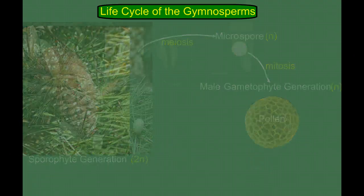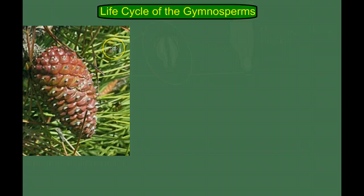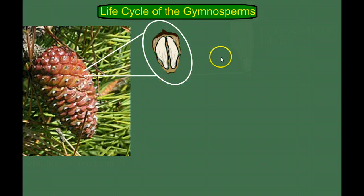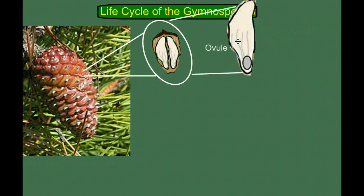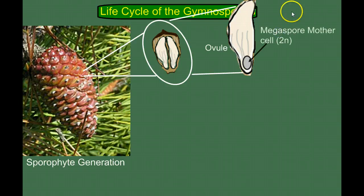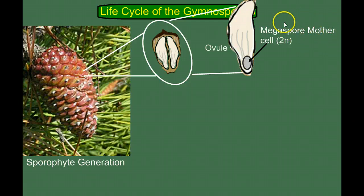Let's move over to the female side and look at the woody cones, or the seed cones. If we zoom in on a section of this — one of these scales — and then zoom into one of those, we see an ovule. And again, this is the sporophyte generation. So inside the ovule is a cell called the megaspore mother cell. Now, if it's a mother cell, it means it's going to give birth to some other cell — it's the cell that's going to make the megaspore. So it's diploid, it's the sporophyte generation, and we're going to need meiosis to make it haploid.